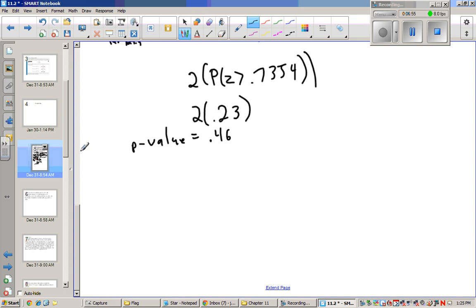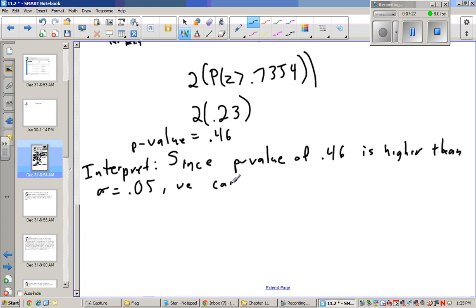Okay, so then when we interpret, since the p-value of 0.46 is higher than α = 0.05, we cannot reject the null. And we can write H₀ or null hypothesis.